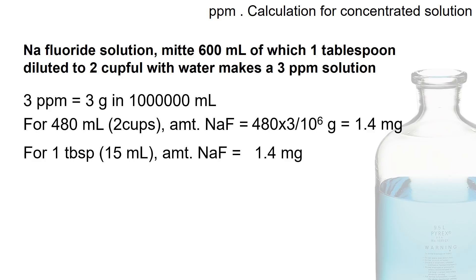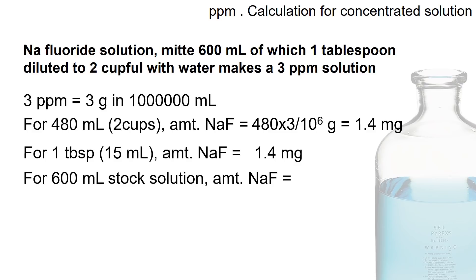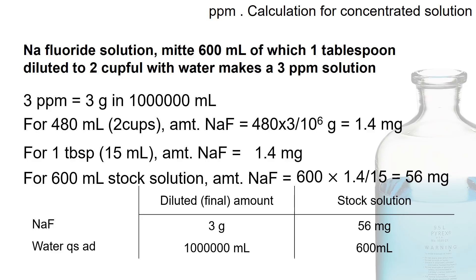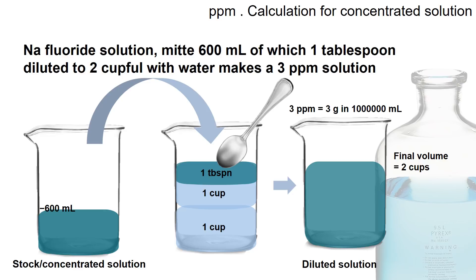To calculate back the 600 ml of the stock solution: using the ratio of 1.4 milligrams in 15 ml (one tablespoon), we calculate how much is present in 600 ml, giving us 56 milligrams. In table form: the stock solution contains 56 milligrams of sodium fluoride in 600 ml of distilled water.